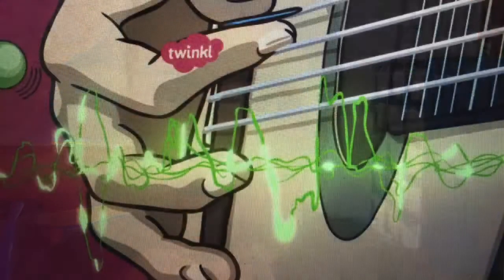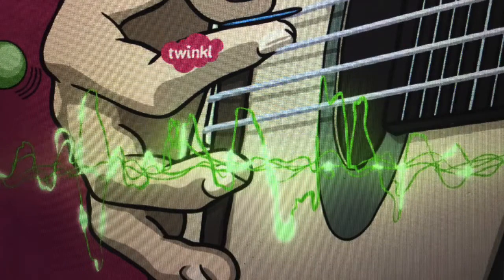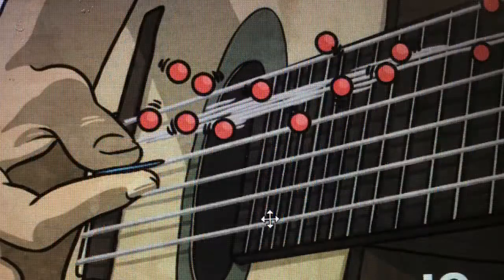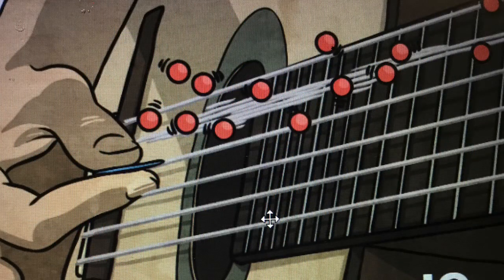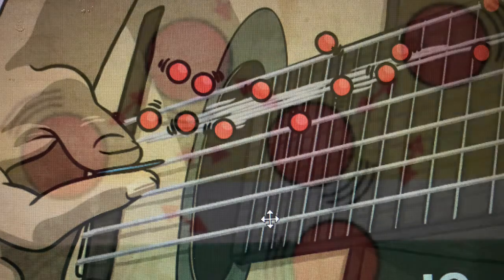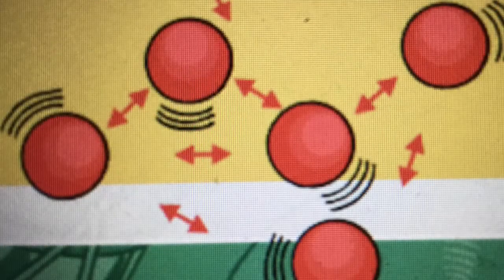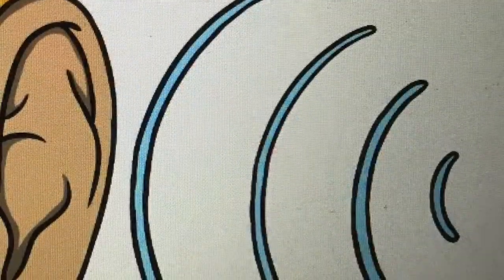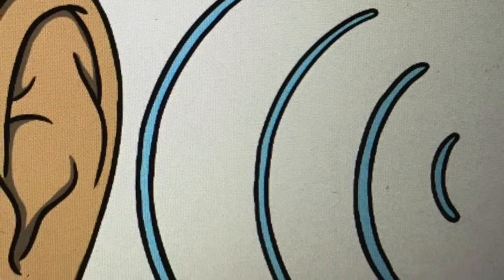Sound moves the air around us. How does sound travel? Let's look at this guitar. When you strum a guitar string, it vibrates. A sound is made by the vibrations. The vibrations move the air particles around it. The air particles bump into more air particles, making sound waves that carry the sound to your ear. And that's how sound travels.